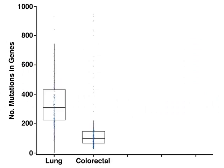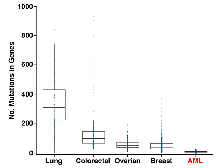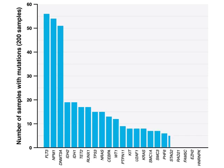As compared with several solid tumor types that have been sequenced, the genomes of adult patients with de novo AML have a small number of genetic mutations. On average, there are only 13 mutations in genes in each AML genome, and an average of 5 mutations are in genes that are recurrently mutated. Across the 200 tumor samples, 23 genes were found to be significantly mutated.